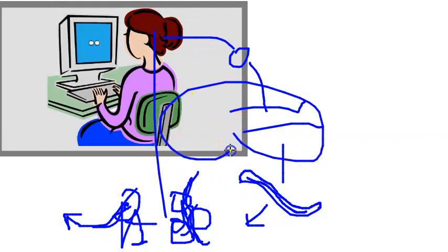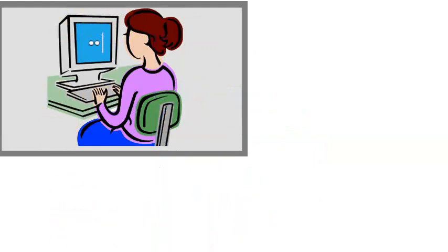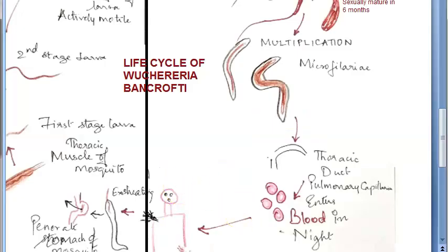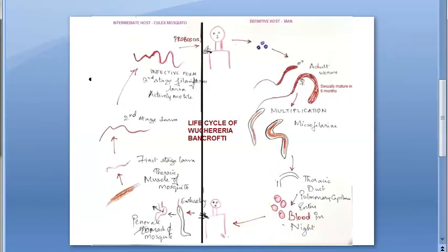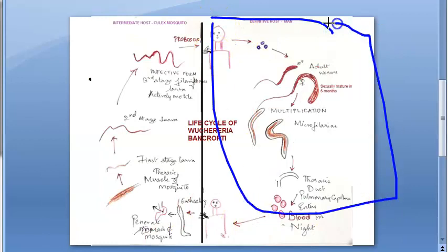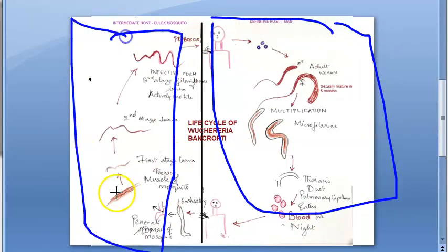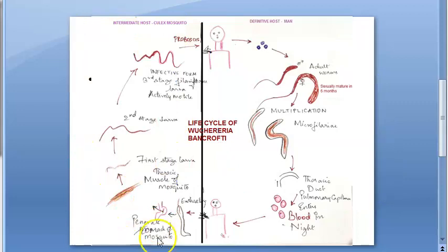In man, multiplication and reproduction — all the progeny — have been made. Now this microfilaria has to go mature and come back. Let's see what happens in the mosquito, which is the intermediate host — the Culex mosquito.